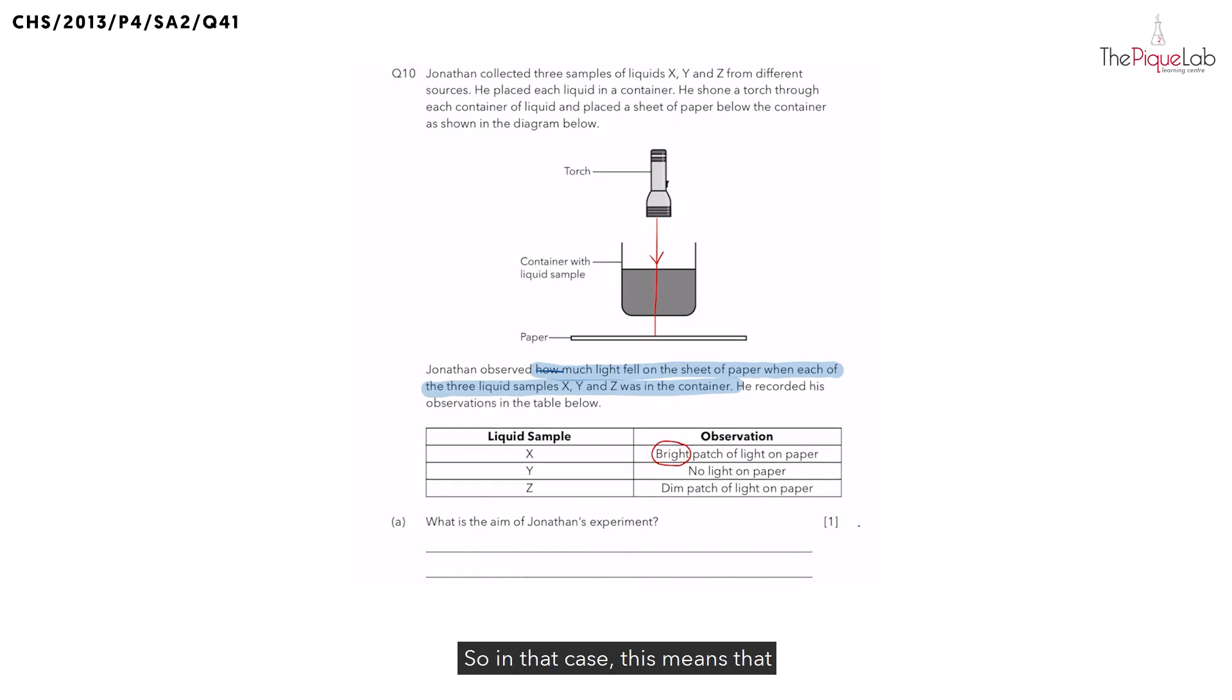So in that case, this means that if I'm able to see a bright patch of light on the paper, liquid sample X must have allowed the most light to pass through. So let's write this down.